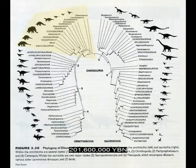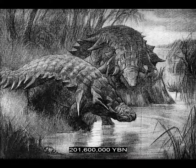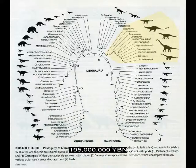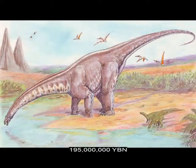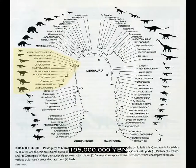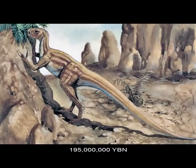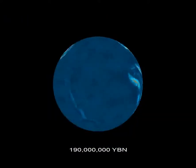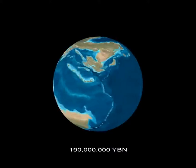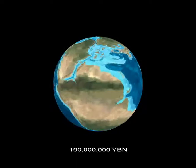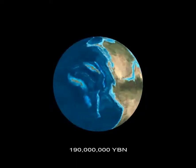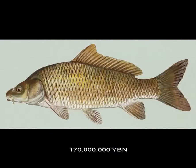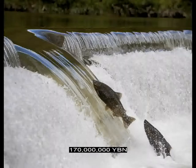Ornithischians Thyreophora evolve — ancestor of the armored ankylosaurs and the plated stegosaurs. Teleosts: eels and tarpons. Sauropods evolve — ancestor of the large long-necked dinosaurs like Apatosaurus, Brachiosaurus, and Diplodocus. Ornithischians Ornithopoda evolve — the duck-billed dinosaurs, ancestor of the hadrosaurs. Teleosts: herrings and anchovies. Supercontinent Pangea splits into Laurasia and Gondwana. The northern part, Laurasia, will form North America and Europe. The southern part, Gondwana, will form South America and Africa. Holometabola Lepidoptera evolve: moths, butterflies, caterpillars. Teleosts: carp, minnows, piranhas. Teleosts: salmon, trout, pike. Amphibians salamanders evolve. Cartilaginous fishes Batoidea evolve — ancestor of all rays, skates, and sawfishes.